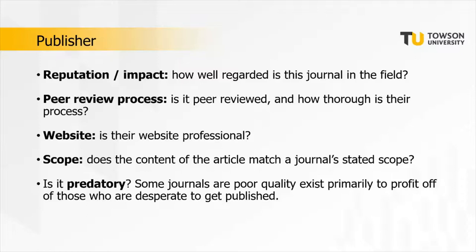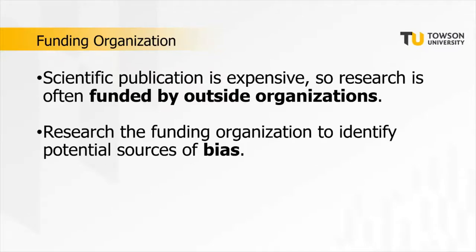Next, consider who funded the research. Scientific publication is very expensive, so research is often funded by outside organizations — researchers might receive a grant from the National Institutes of Health, the National Science Foundation, or similar bodies. However, sometimes research is funded by a corporation, and that's something to keep in mind because it could be a potential source of bias. For example, if a study funded by Monsanto is looking at the effects of a product Monsanto produces, those researchers might feel pressure to find and report a certain result, potentially hurting the integrity of the study.